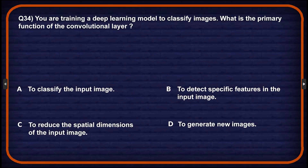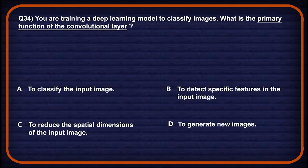Let's move on to question number 34: you are training a deep learning model to classify images. What is the primary function of the convolutional layer? Option A: to classify the input images — classification is done by fully connected layers, not convolutional ones, so wrong choice. Option B: to detect specific features in the input image — convolutional layers extract meaningful features from image data, so this might be a potential answer.